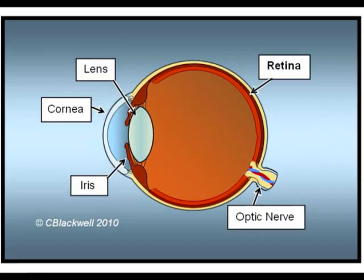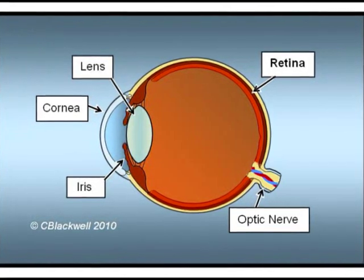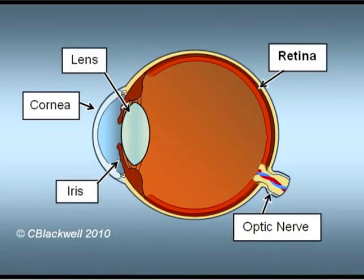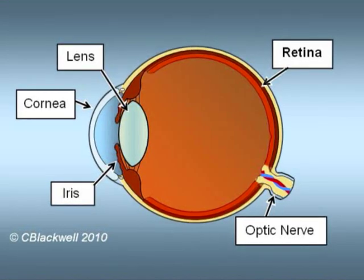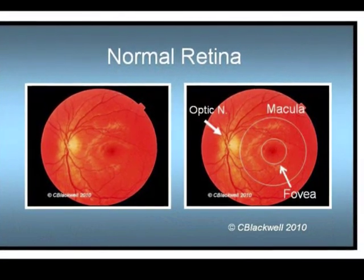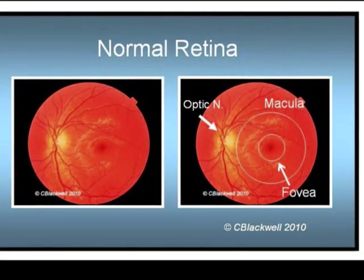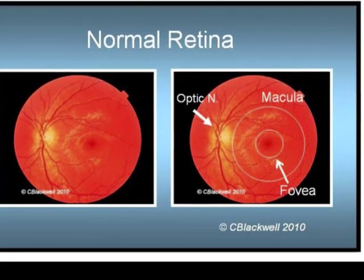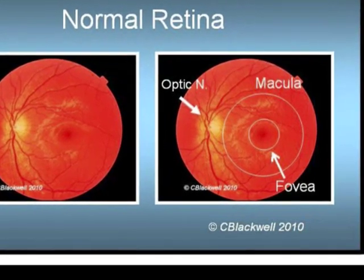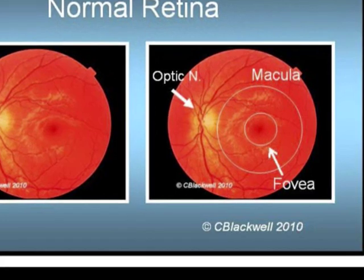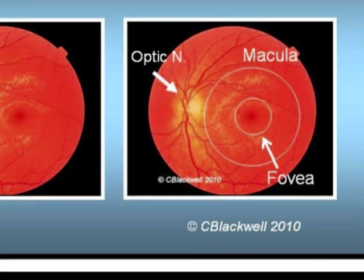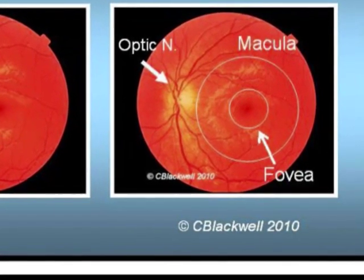The retina is the main part we are concerned with in discussing diabetic damage to the eye. The retina is a layer of nerve tissue that lines the inside of the eye. It functions like film in a camera, sensing light and turning that into nerve impulses that travel along the optic nerve to the brain. You can see the optic nerve, with arteries and veins branching out to supply the retina. The outer white ring denotes the macula, the part of the retina responsible for good central vision. The inner ring denotes the fovea, which has the best fine detail vision.